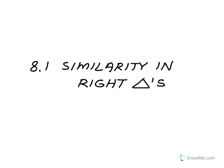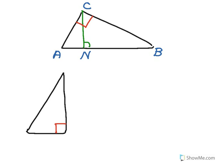Lesson 8.1 is about similarity in right triangles. The first theorem is about a right triangle: if I take a right triangle, triangle ABC, and draw an altitude from the right angle to the opposite side, hitting side AB at a right angle, I actually divide that big triangle into two smaller triangles that are similar to each other and similar to the original triangle ABC.